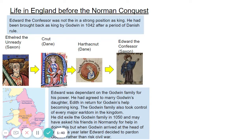Edward was totally dependent on the Godwin family for his power. He had agreed to marry Godwin's daughter, Edith, in return for Godwin's help becoming king. So Godwin is playing a long game. He could probably have made himself king if he'd so wished, but he sees a much more legitimate way of bringing his family to power — not to seize the kingdom himself and face potential threats and invasions, but to marry his daughter to a rightful heir, Edward the Confessor, so that Godwin's grandchildren and great-grandchildren can all be kings of England.